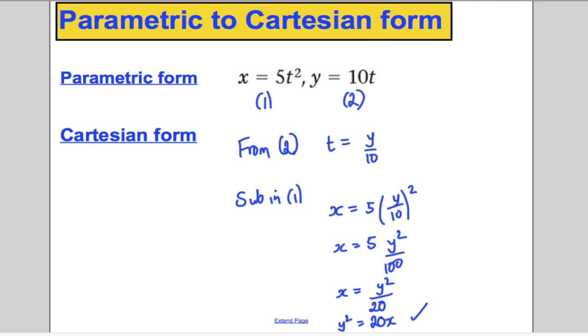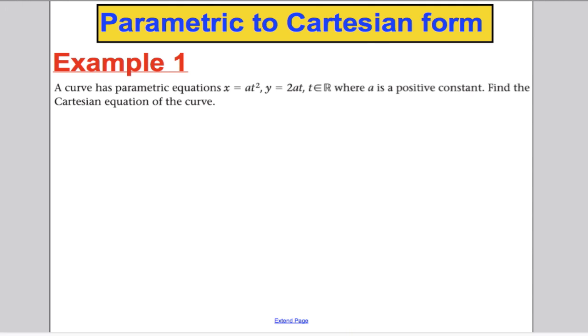Right, let's have a go at another example, then I'll let you do one yourself. Example 1. A curve has parametric equations x equals at squared and y equals 2at. t is your parameter and a is just a constant. a is like a number like 5 or something like that. In this case, we're using a to stand for any number. But a is not a variable. x and y are your variables and t is your parameter. a, like I said, is a constant. Find the equation of the curve.